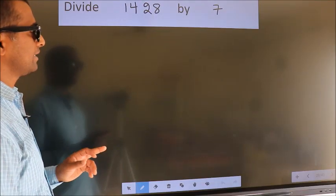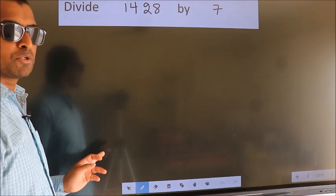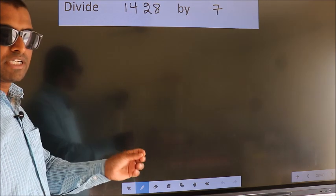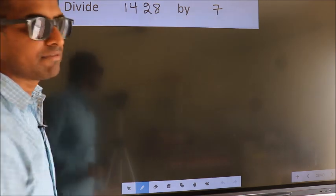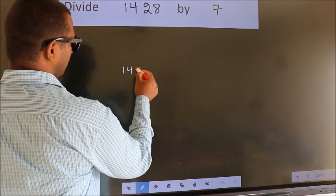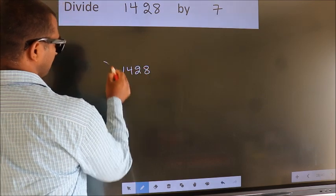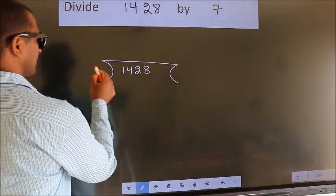Divide 1428 by 7. To do this division, we should frame it in this way: 1428 here, 7 here.